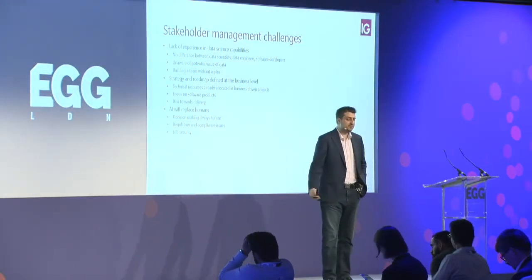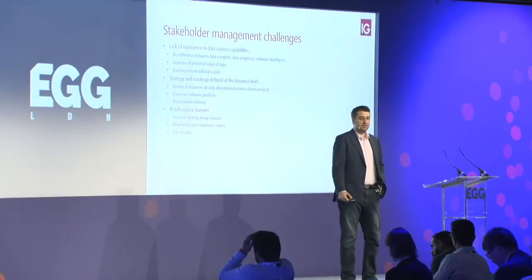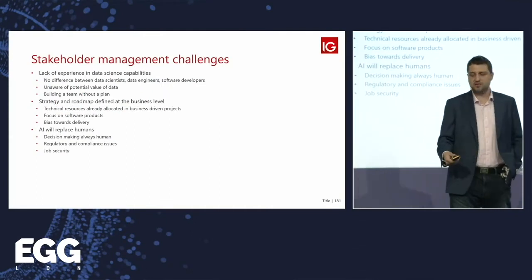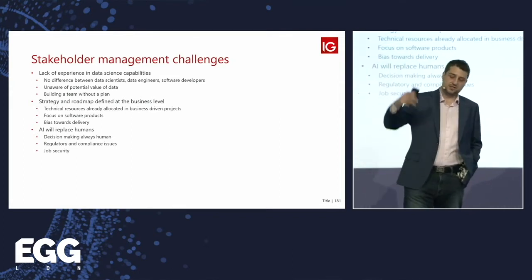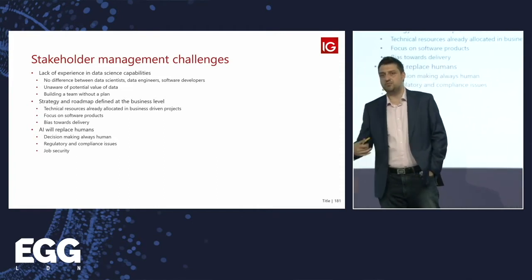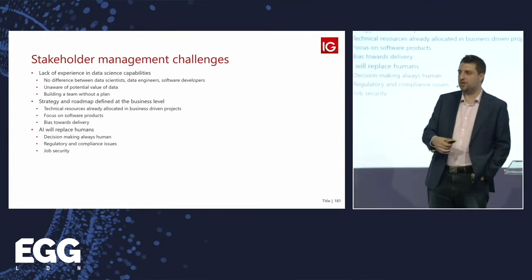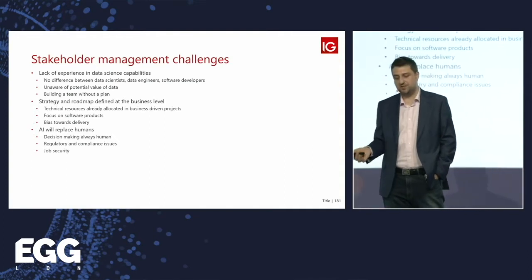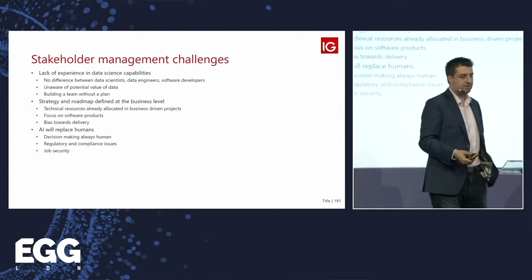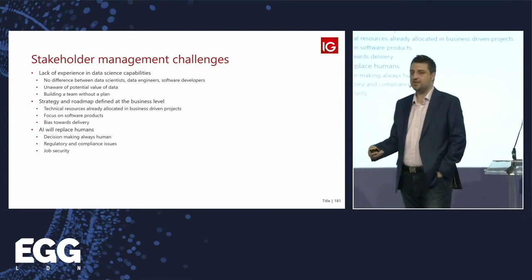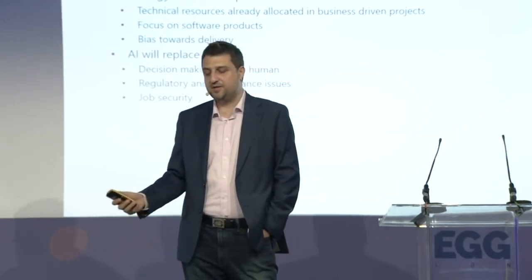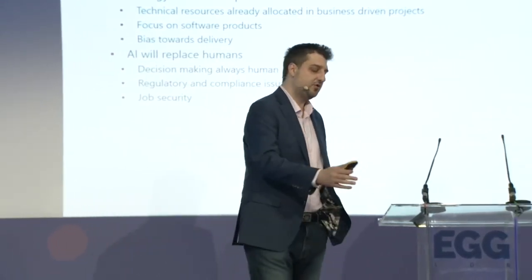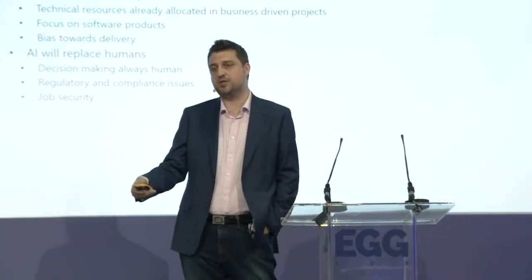The second group of challenges is that strategy and roadmap are defined at the business level — whether quarterly, annual, or semi-annual — and rarely do data scientists get consulted on what they're working on or want to do. It starts top-down. When you pitch a project, you often hear 'very interesting, but all our engineering resources are tied up.' Companies also tend to focus on software solutions, since they can visualize and ask for those more easily. The same hasn't happened for data science yet, and there's always a bias toward immediate delivery and short-term gains over longer-term strategic research.